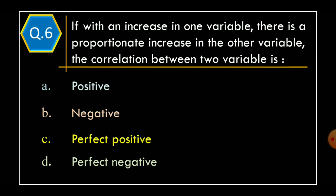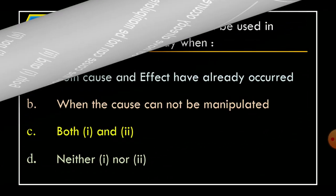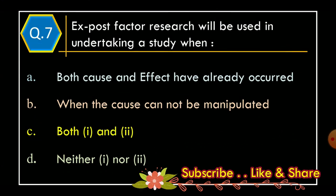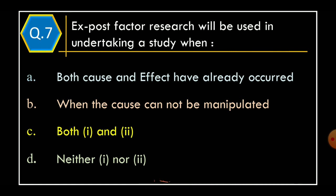Question 6. If with an increase in one variable there is a proportionate increase in the other variable, the correlation between the two variables is: Option A: Positive. Option B: Negative. Option C: Perfect Positive. Option D: Perfect Negative. The correct option is Option A, Positive.